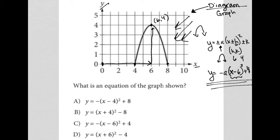The question says: what is an equation of the graph shown? I'm going to cross out B and D because neither of those have the negative sign in front of the parentheses that I want in order for my parabola to face downward. That's an easy 50-50 cross out.